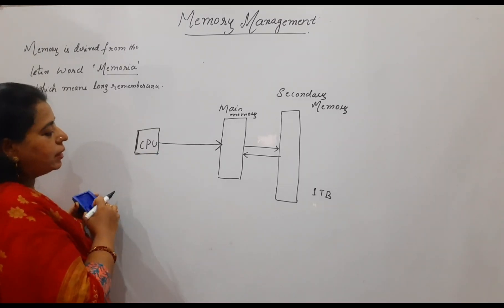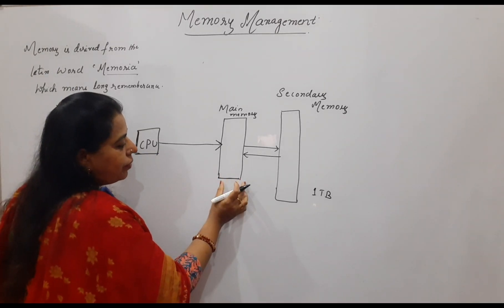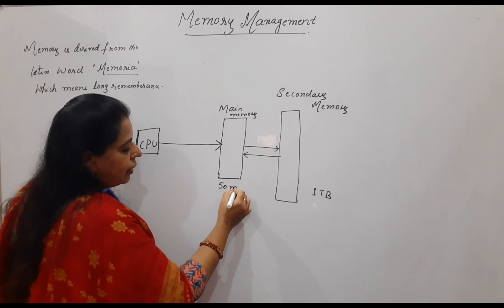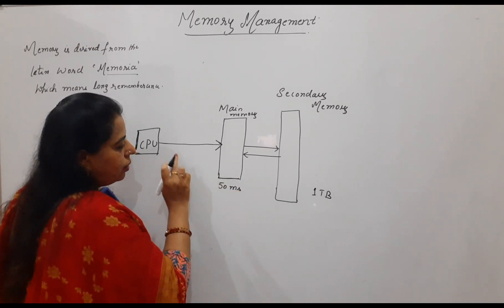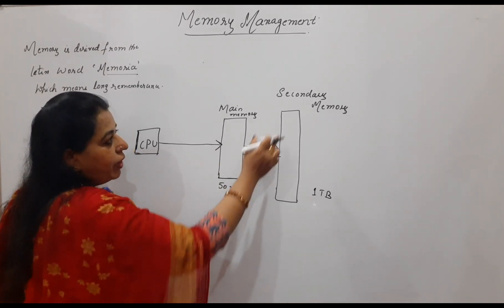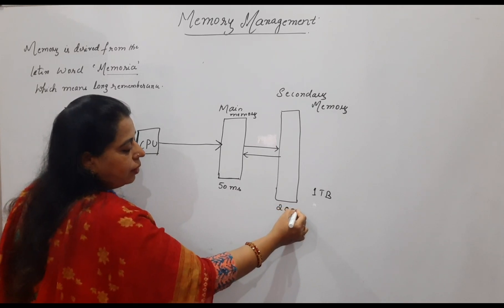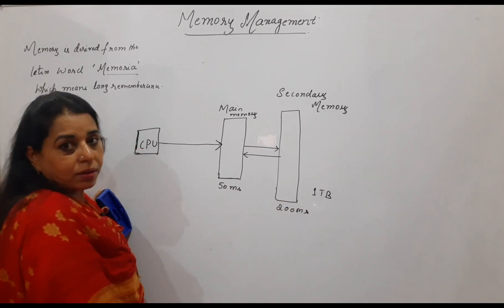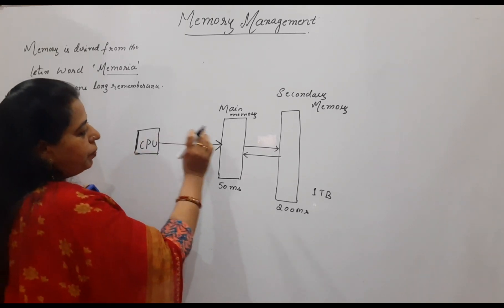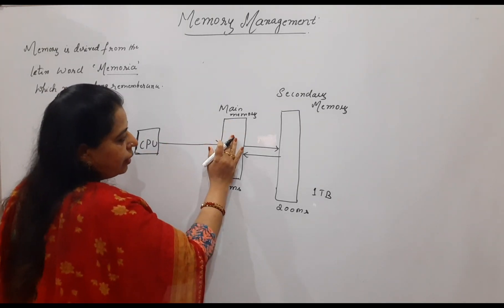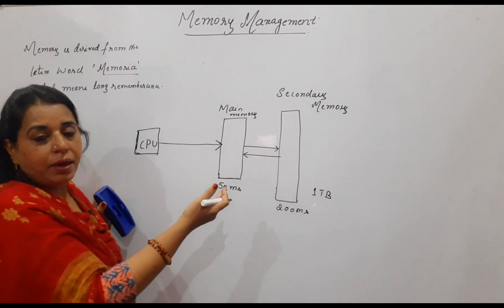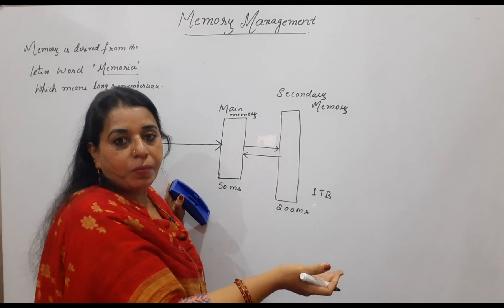For example, main memory has faster access — let us take 50 milliseconds. The access time for the CPU to access the main memory is 50 milliseconds, whereas to access the secondary memory it is 200 milliseconds. Whenever the CPU wants to access a particular instruction, that instruction should be present in the main memory, and it can be one of the instructions of a particular process.